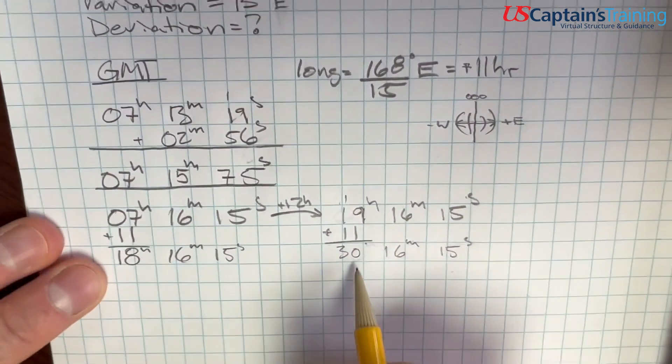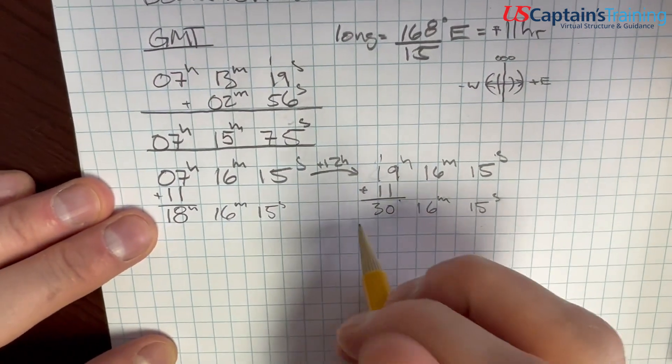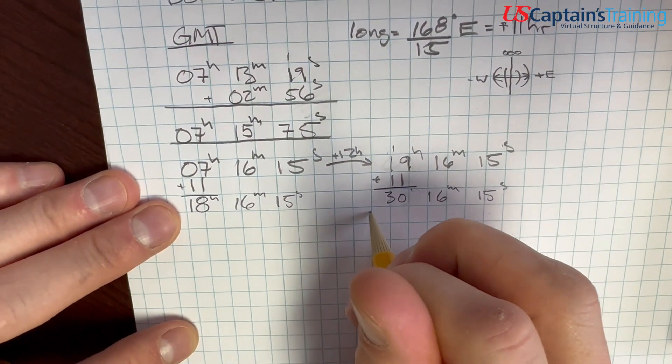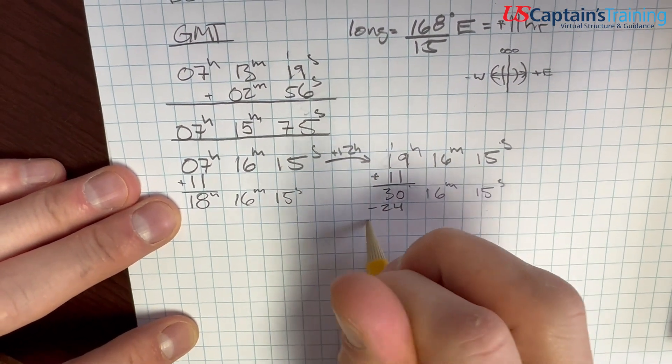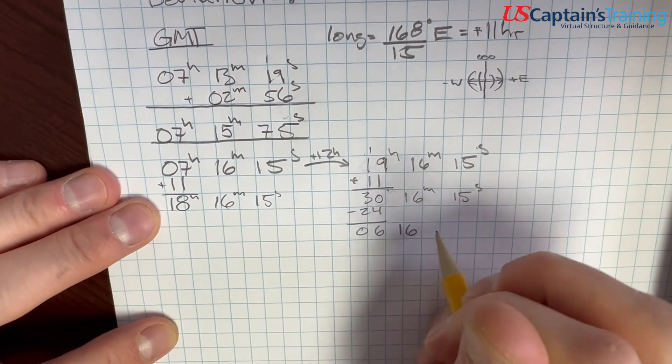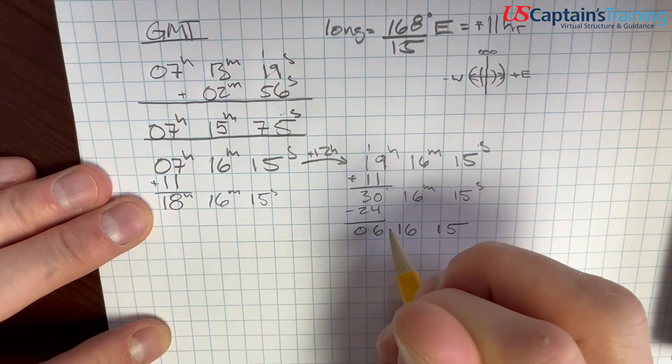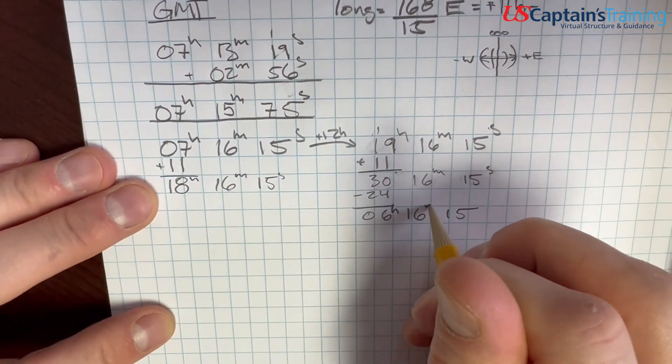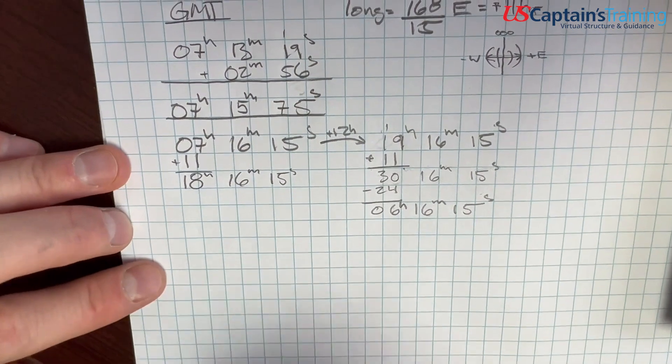So what we need to do, this 30, that's not right. So we subtract 24, and we get 6 hours 16 minutes 15 seconds. Now we need to figure out, this would be a sunrise, and this would be a sunset. What were we looking at when we took the bearing?